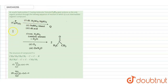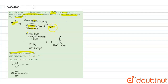Hello everyone. In this video we have a question: hydrocarbon P having the molecular formula C6H10 gave acetone as the only organic product through the following sequence of reactions, in which Q is the intermediate organic compound. The question is: what is the structure of compound P?